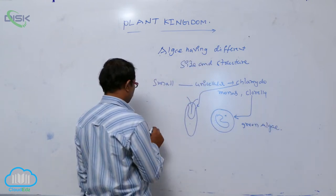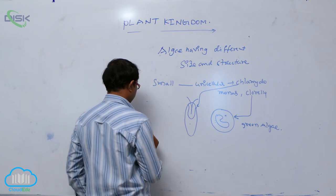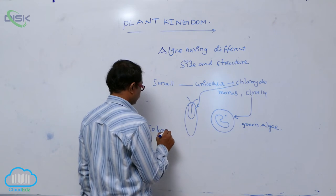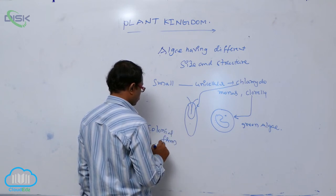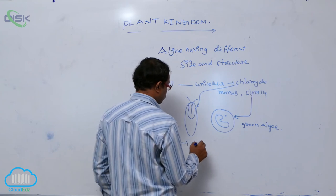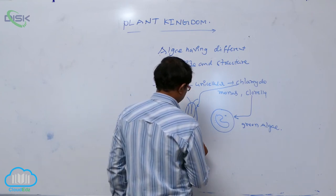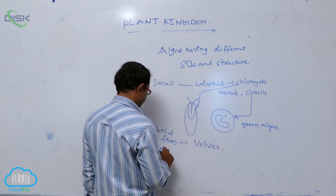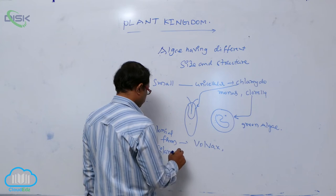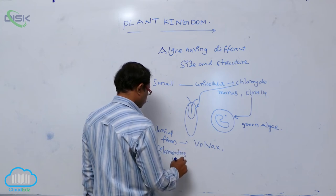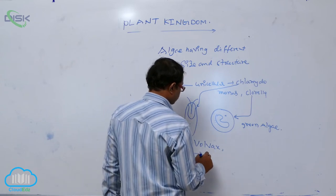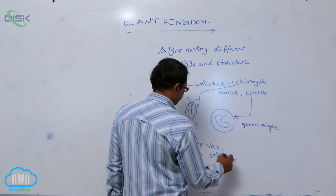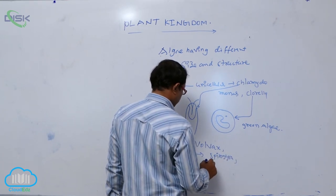Some algae are in colonial form, and some are filamentous. Colonial form means what are that Volvox. Some are filamentous and branched, and they are known as Spirogyra and Ulothrix.